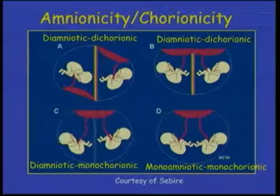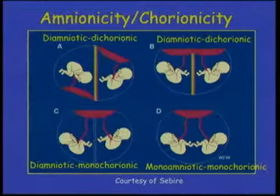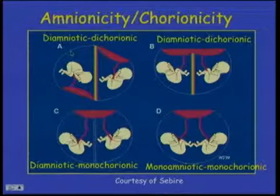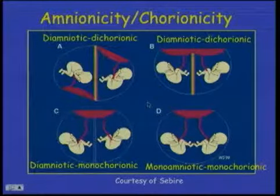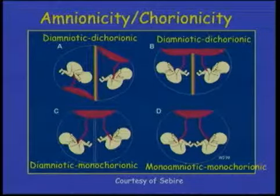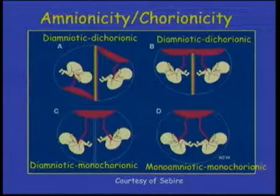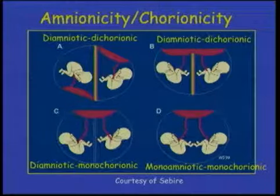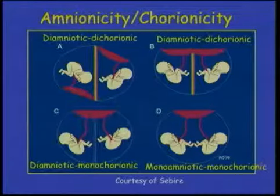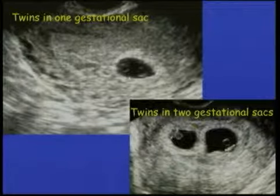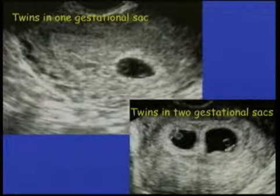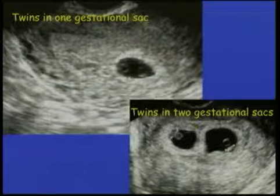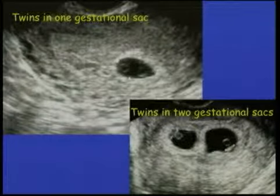The fetal number must be recorded, and the amnionicity and chorionicity should be documented for multiple pregnancies. Amnionicity and chorionicity refer to whether the twins are diamniotic dichorionic — as seen in the upper image A with two placentas and a thick four-layer membrane, or in B with a single placenta — versus monochorionic diamniotic with a single placenta and a thin separating membrane, or monoamniotic monochorionic in D with no separating membrane. In the upper image, we can see a gestational sac with two yolk sacs suggesting an amnion in between, and in the lower right, twins with a very thick separating membrane consistent with diamniotic dichorionic placentation.